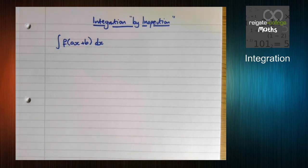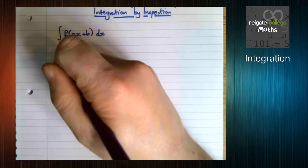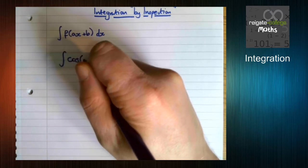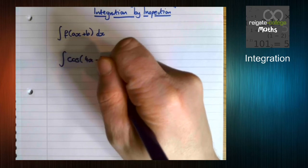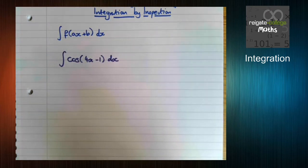The important thing is thinking about integration as the reverse of differentiation. That can really help. So for instance let's think about this type of question. We are trying to integrate cos of 4x minus 1.